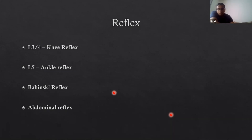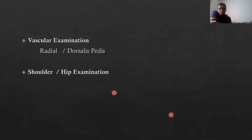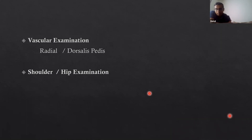Always remember to do the Babinski reflex — an upgoing plantar response points to a cranial or spinal cord problem rather than a lower motor neuron problem. If patients have scoliosis, always do an abdominal reflex, as an absent abdominal reflex indicates possible underlying spinal cord pathology. Perform a vascular examination testing peripheral pulses in the upper and lower limbs, as claudication symptoms from vascular disease can mimic spinal stenosis. Always examine the neighboring joint — the shoulder if examining the cervical spine, and the hips if examining the lumbar spine.